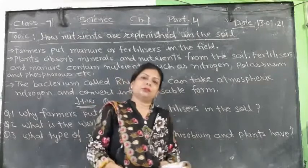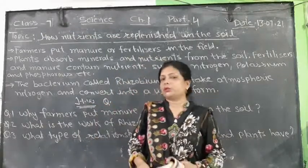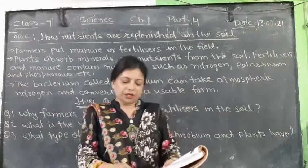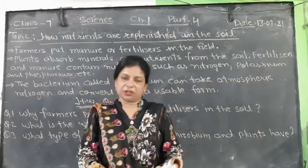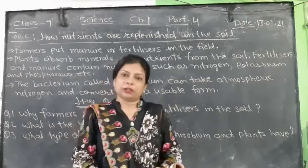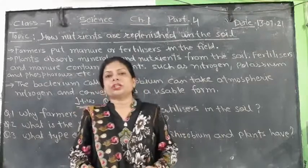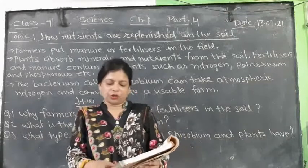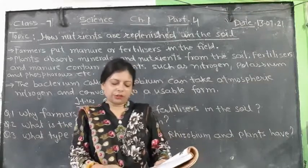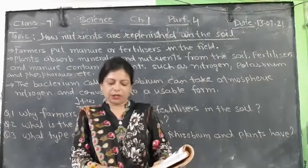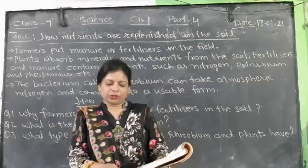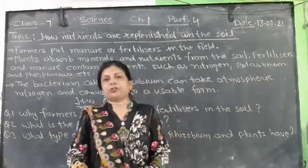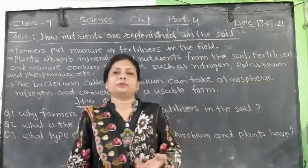In return, the plants provide food and shelter to the bacteria. We call this a symbiotic relationship. This association is of great significance for farmers because they can reduce the use of nitrogen fertilizers by growing leguminous plants.